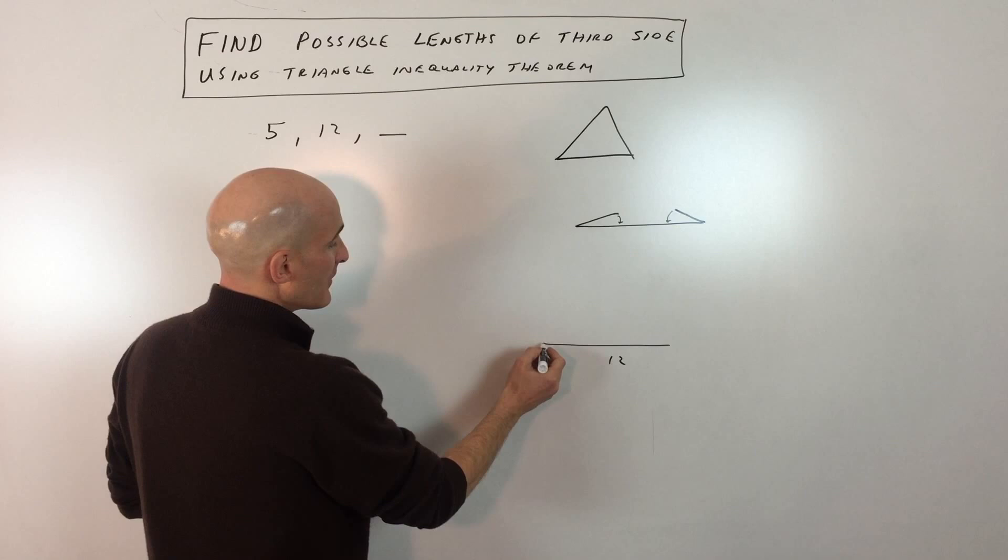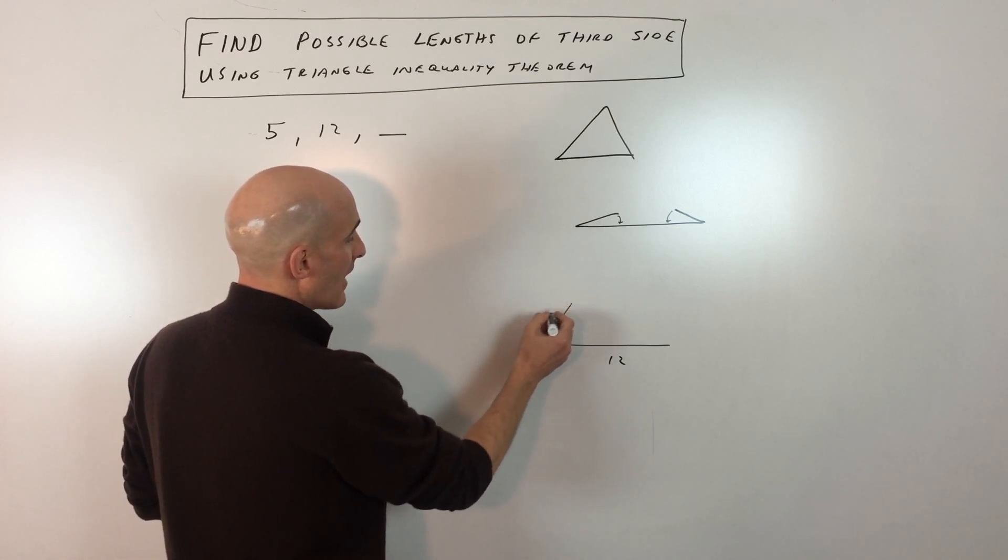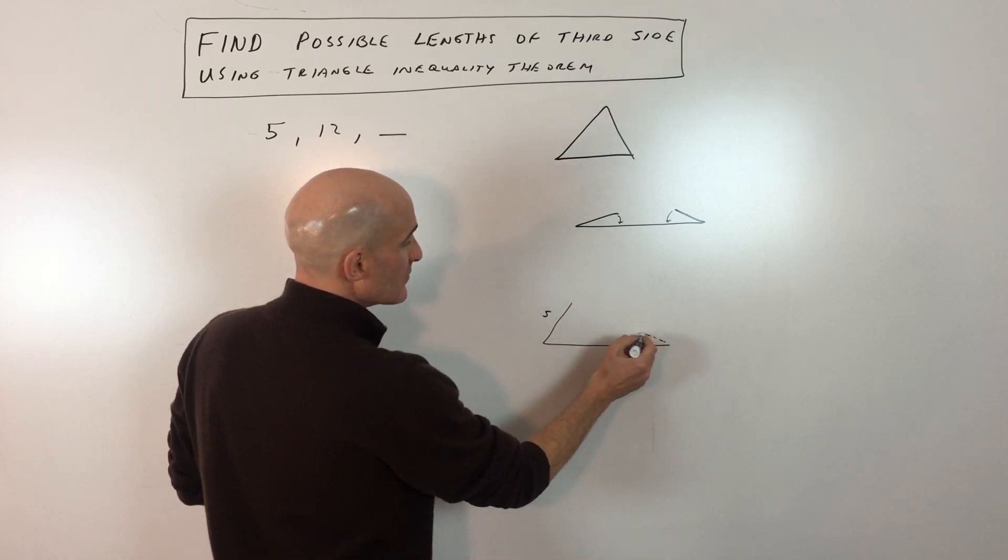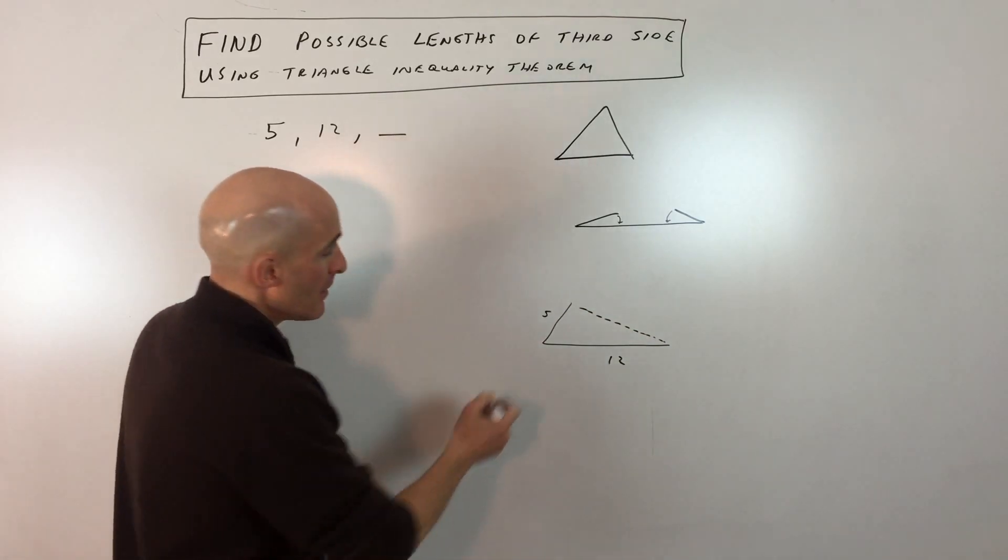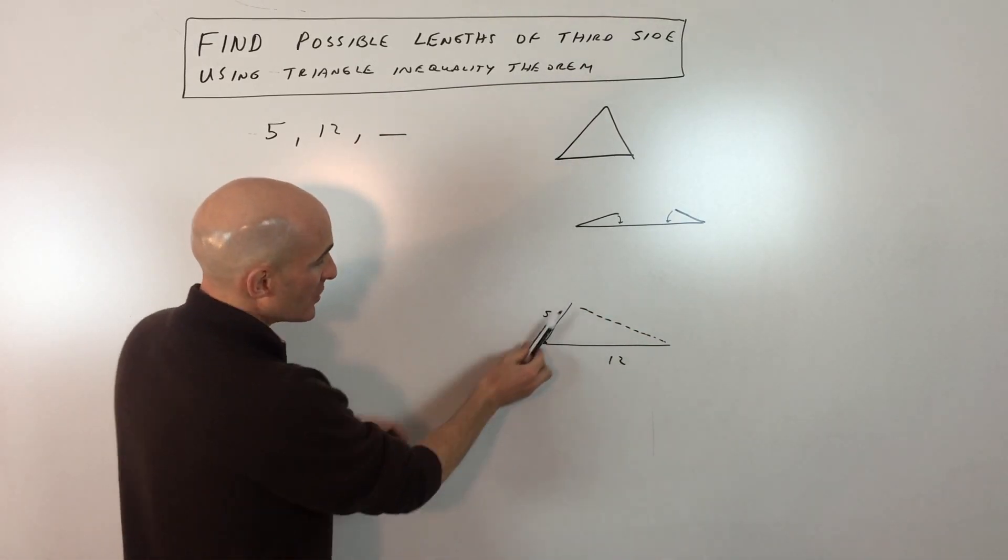So here's 12, and let's just say that here's 5. So the third side could be like that. But you see this point right here? This is like a hinge.